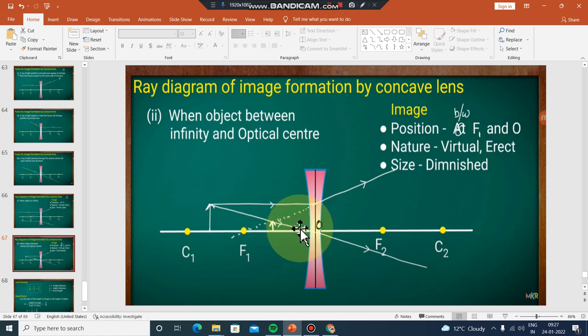The image is virtual and erect, small in size or diminished. Image position is between F1 and O, nature is virtual and erect, size is diminished.